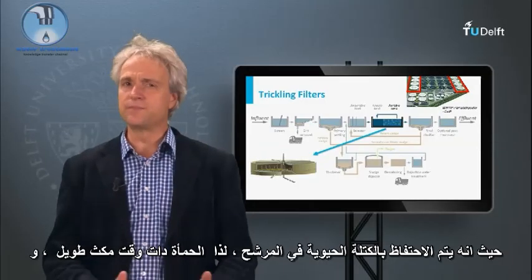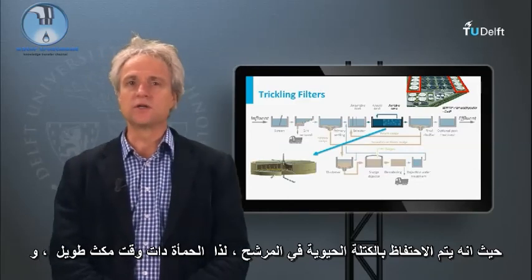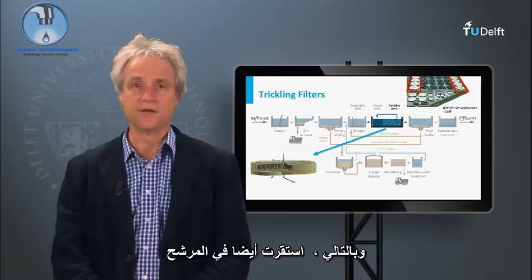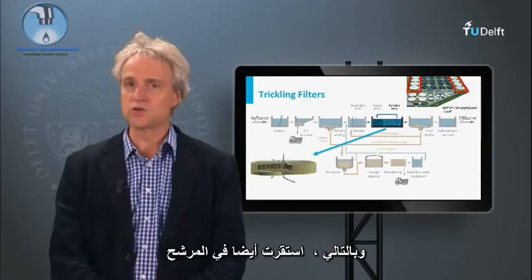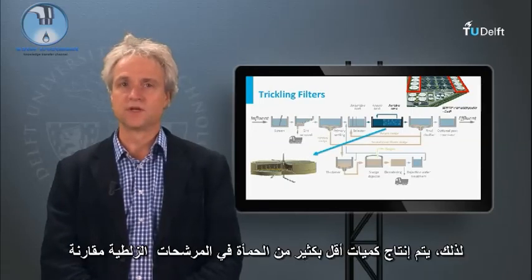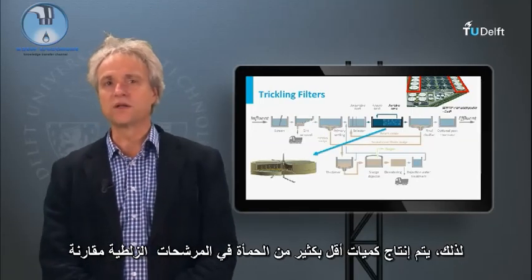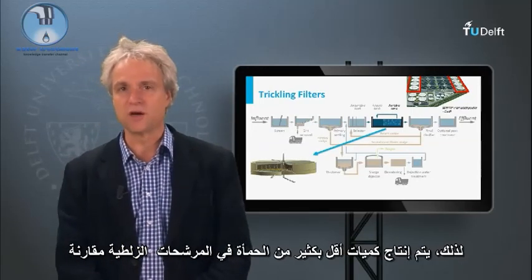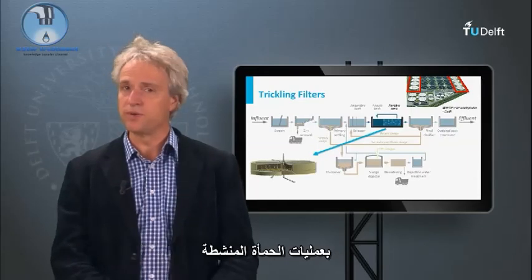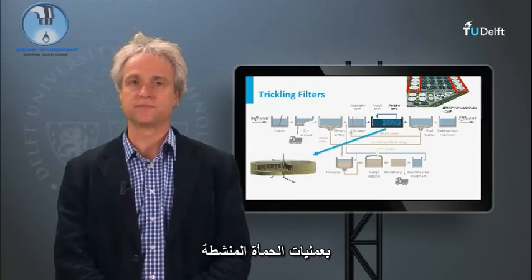Since the biomass is retained in the filter, the sludge has a long residence time and thus is also stabilized in the filter. Therefore, much lower quantities of sludge are being produced in trickling filters compared to activated sludge processes.